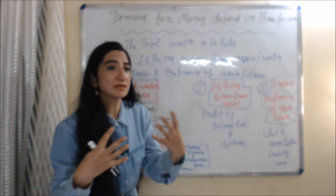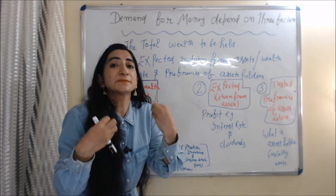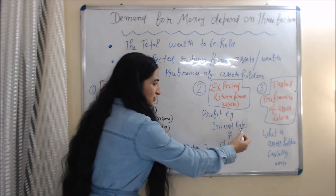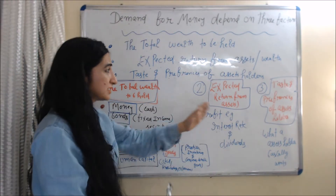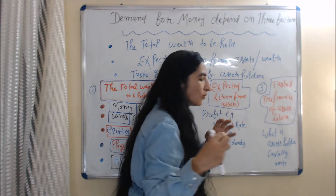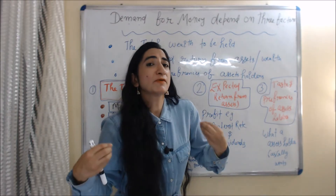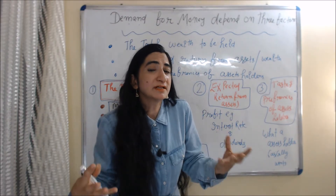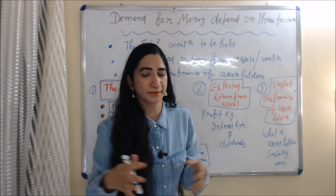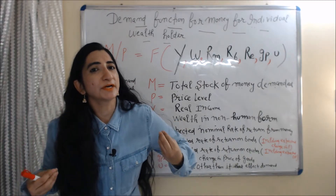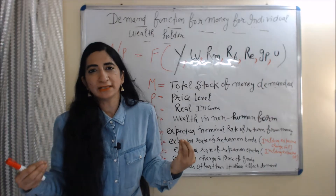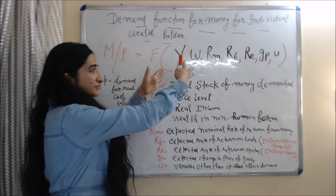Human capital includes our skills, knowledge, and experiences. Secondly, we talk about expected return from assets, which means the profit we expect from our wealth — for example, interest rates or dividends. Lastly, taste and preference of the asset holder means what an asset holder basically wants.